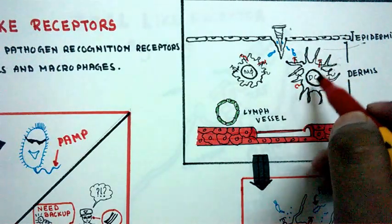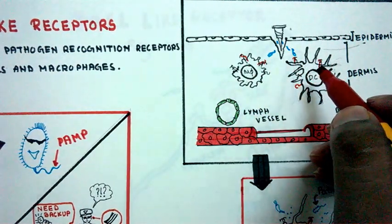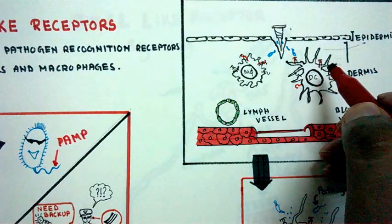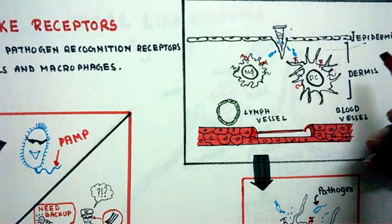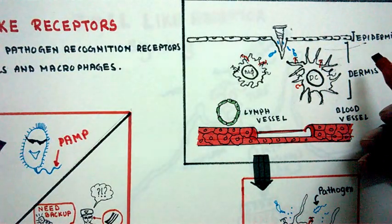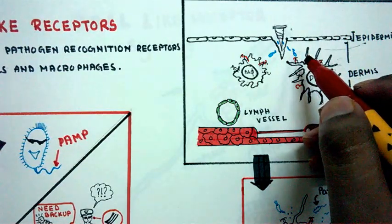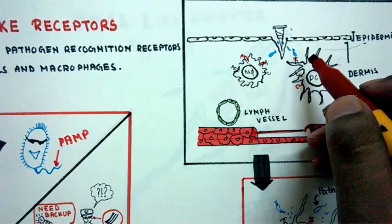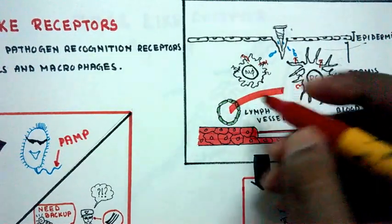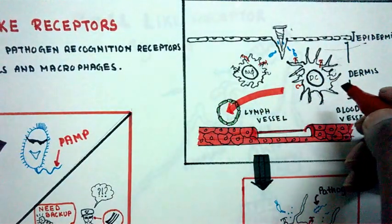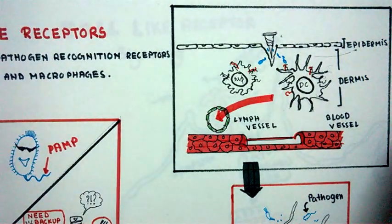Dendritic cells and macrophages both have pathogen recognition receptors called TLRs, the toll-like receptors. Once the dendritic cell identifies these pathogen-associated molecular patterns, it travels via the lymph vessel towards the lymph node. Inside the lymph node we have T cells and B cells.